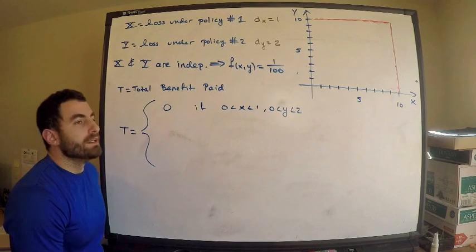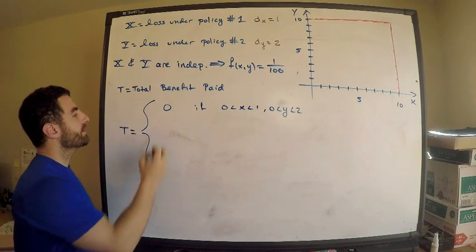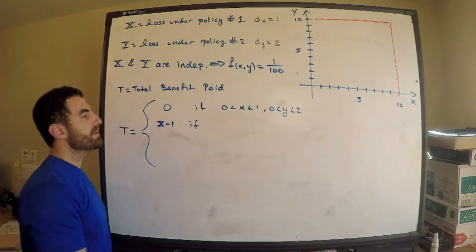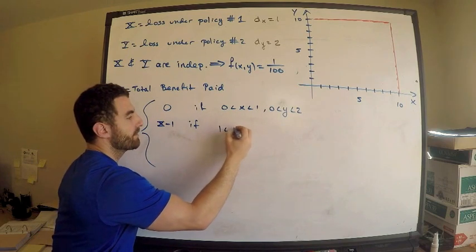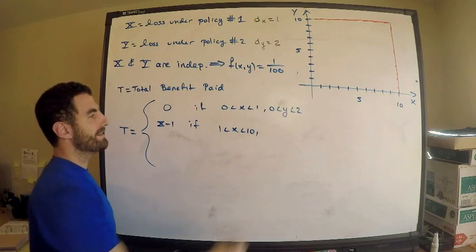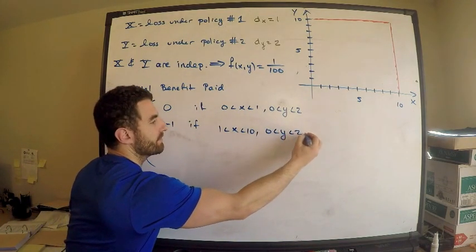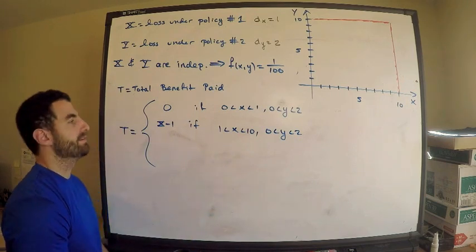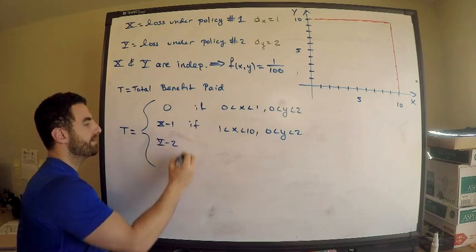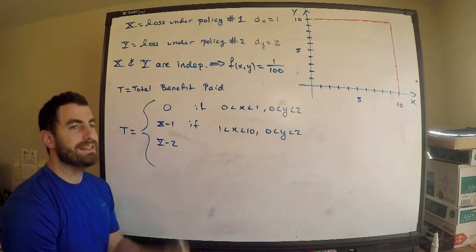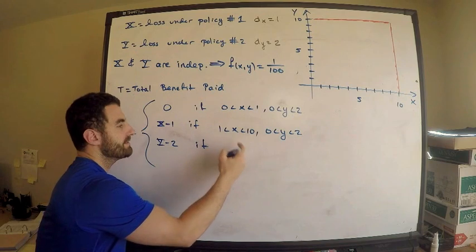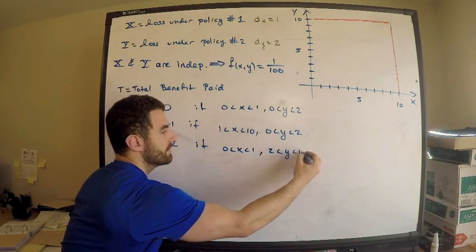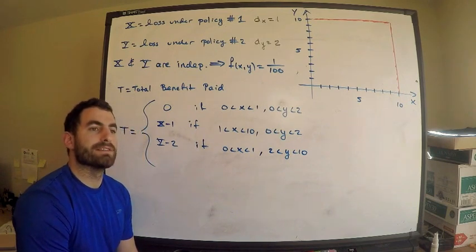When is the total benefit positive? It equals x minus one if losses for policy one exceed the deductible but are less than ten — so 1 < x < 10 — while losses for policy two stay between zero and two. We could also have T equal y minus two if policy two's losses exceed its deductible of two: 0 < x < 1 and 2 < y < 10.